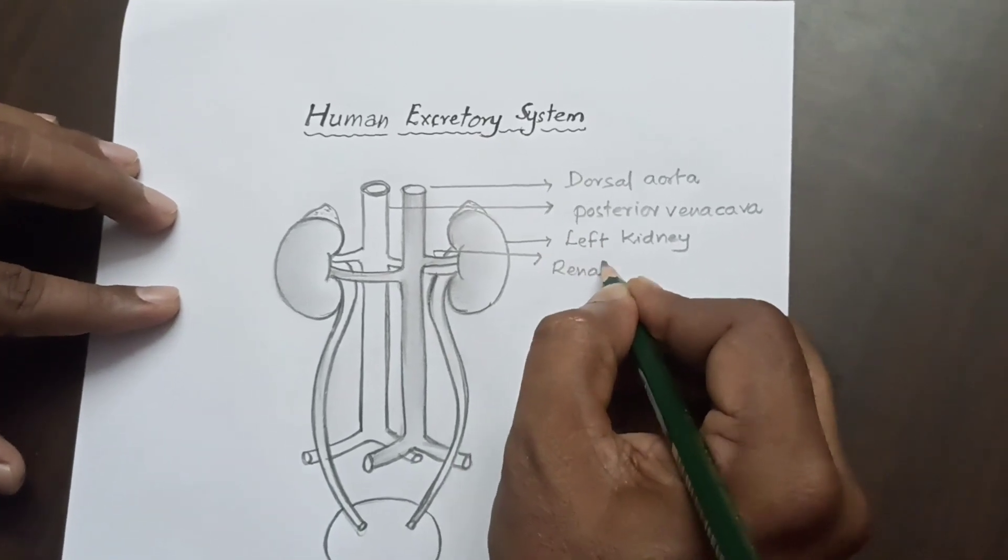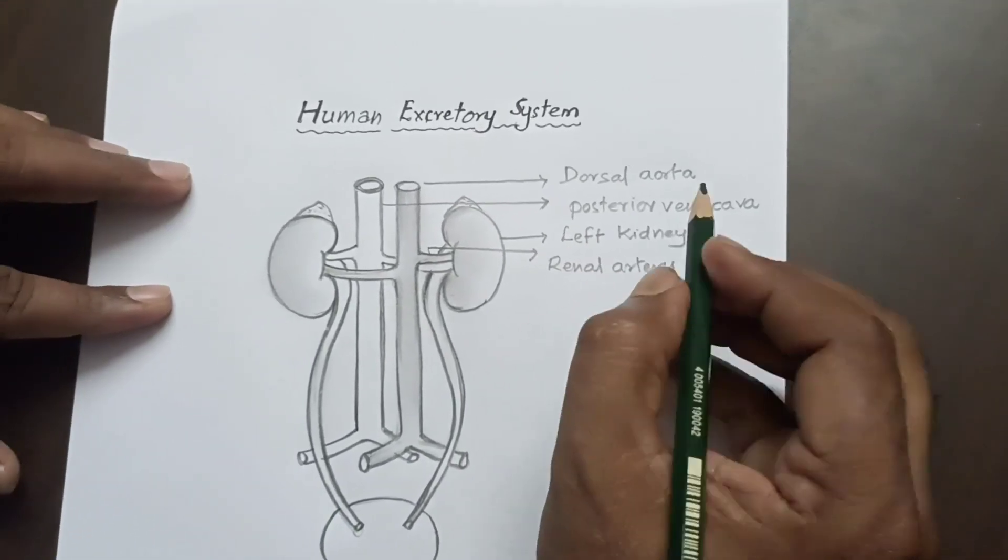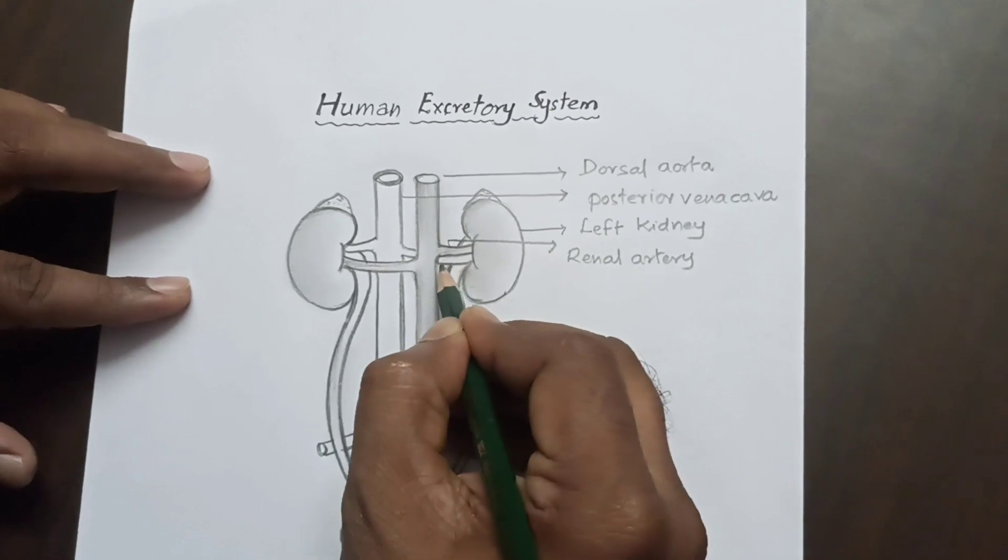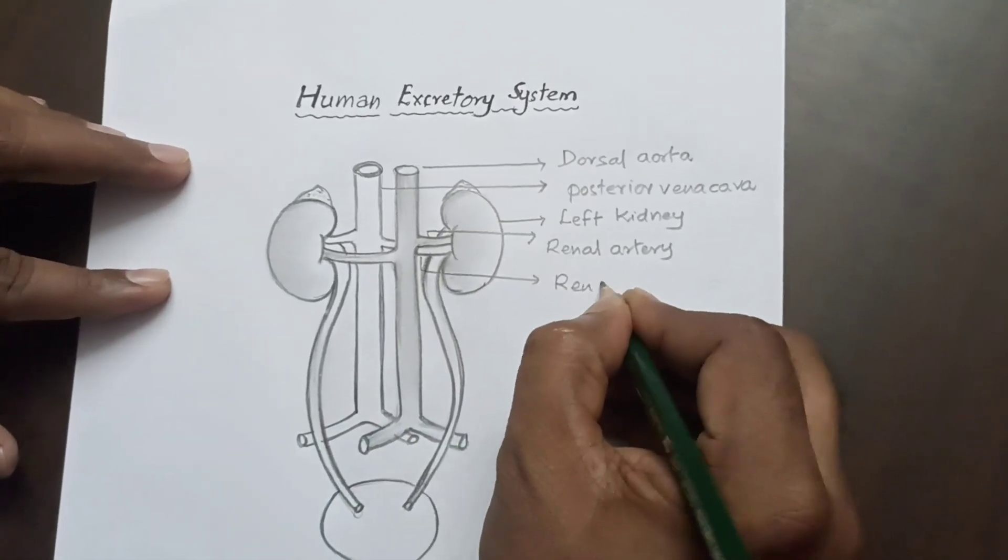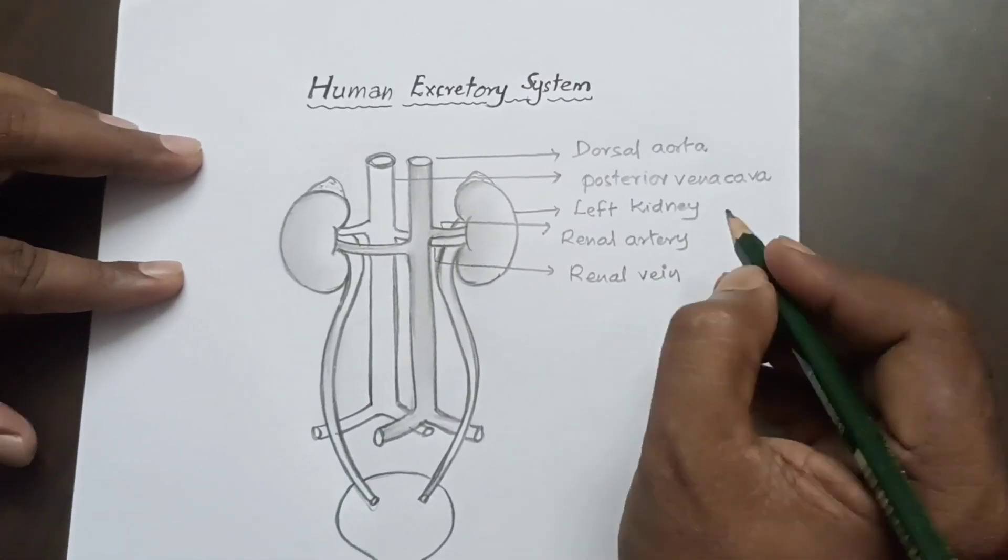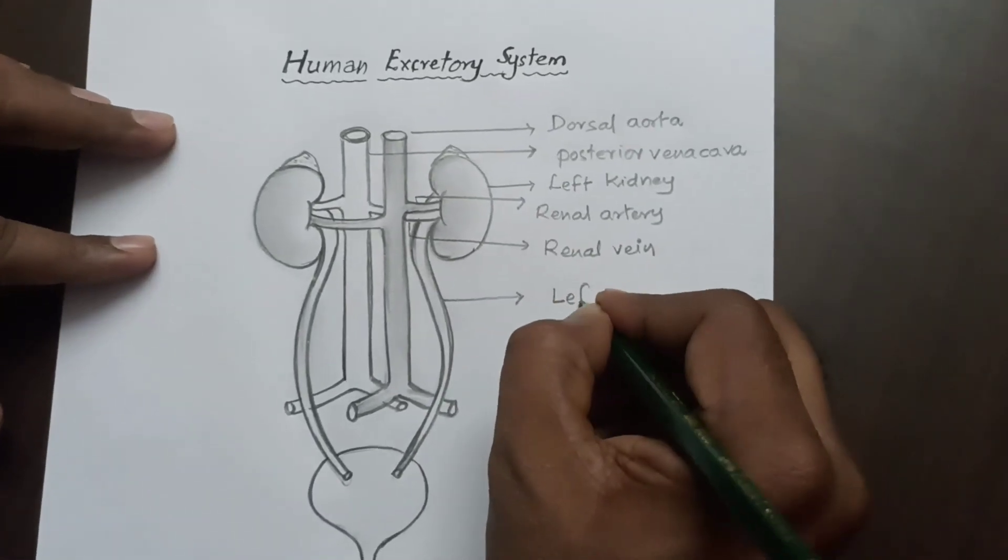This is renal artery. The down one is renal vein. This is left ureter.